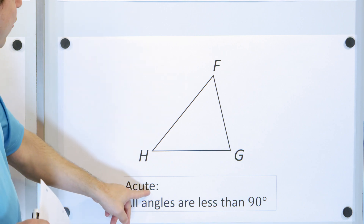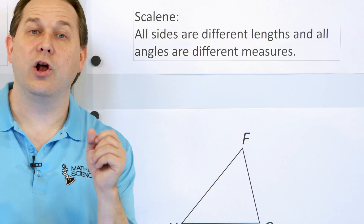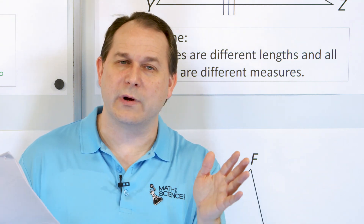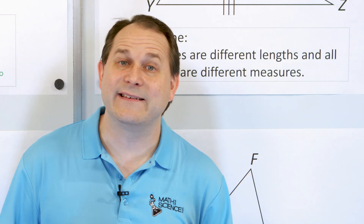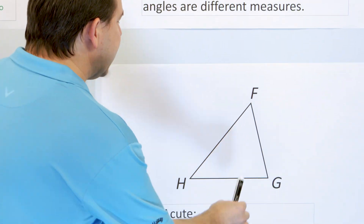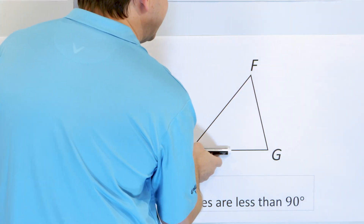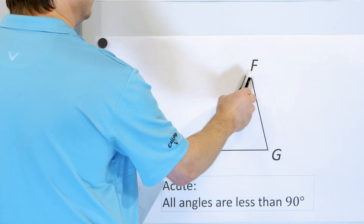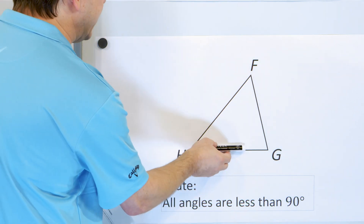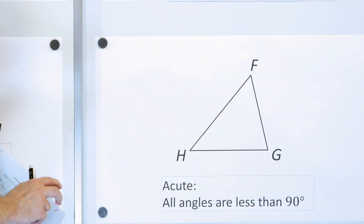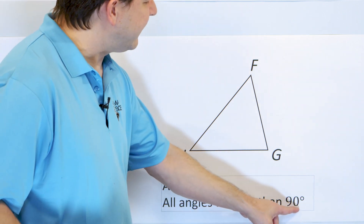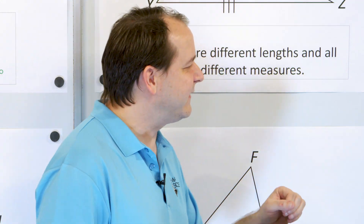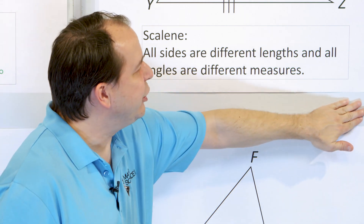We have what we call an acute triangle, if all of the angles on the inside are acute — meaning less than 90 degrees. So if you think of a 90-degree angle being straight up and down, this angle is acute, this angle is acute, and this angle is also acute because they're all less than 90. If all angles are less than 90, we call it an acute triangle.